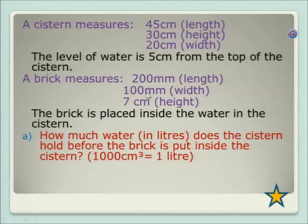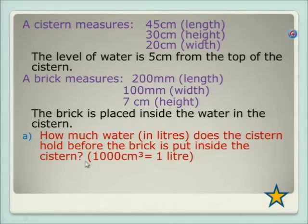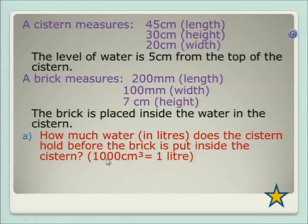Let's forget about the brick for now because the first part of the question doesn't involve the brick. It asks: how much water in litres does the cistern hold before the brick is put inside? So there's no brick in there yet — it's just full of water. The conversion to litres, because they want the final answer in litres, is that 1,000 centimetres cubed equals 1 litre. We'll first work out the volume in centimetres cubed, then convert to litres.